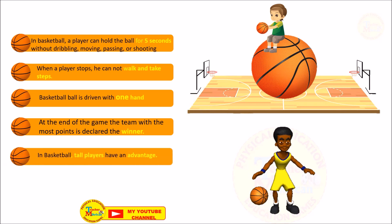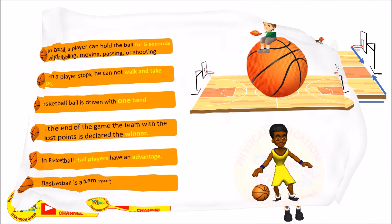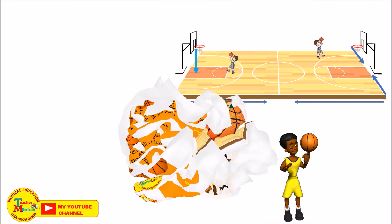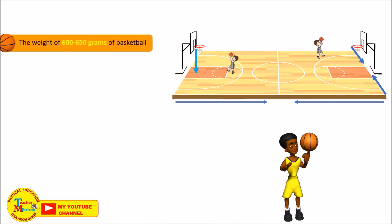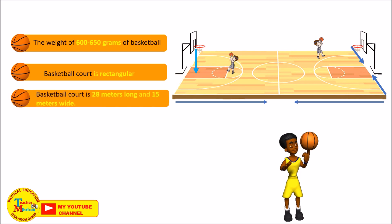Basketball is a team sport. The weight of a basketball is 600 to 650 grams. The basketball court is rectangular, 28 meters long and 15 meters wide.